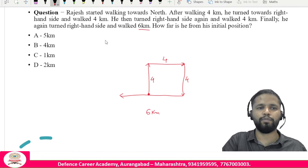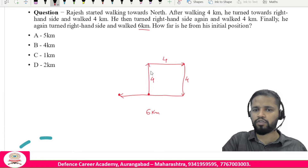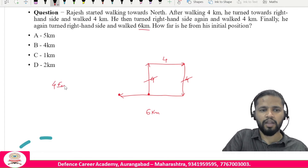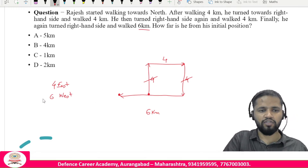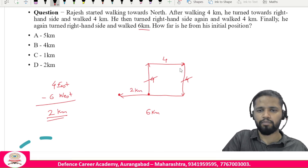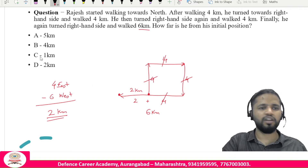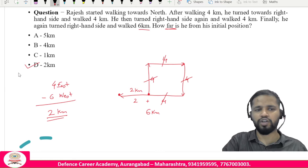The 4 km north and 4 km south cancel out, leaving zero vertical displacement. Going 4 km east and 6 km west: the 6 km west is split as 4 + 2, so the 4 km east and 4 km of the westward distance cancel. Rajesh is 2 kilometers from his starting point — option D.